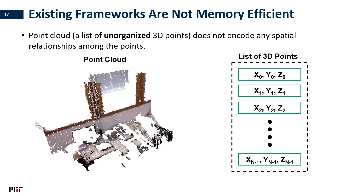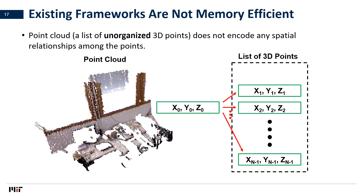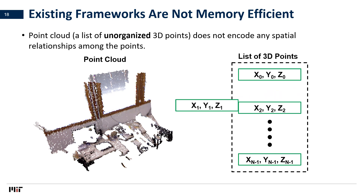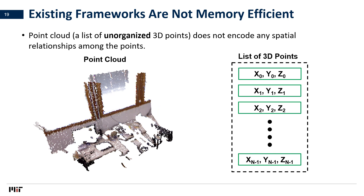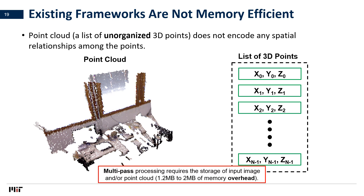However, the point cloud is typically stored as an unorganized list of points where the spatial relationships among the points are not encoded. For instance, consider a list of n points — for each point in the list, we want to find its nearest neighbor in the same list. This involves computing the distance between each point and every other point. Doing so for all points requires multiple traversals across the entire list. This is precisely the reason why prior approaches that directly convert the point cloud to Gaussians require multi-pass processing. Since points are accessed multiple times, they are stored entirely in memory, which requires megabytes of storage overhead.